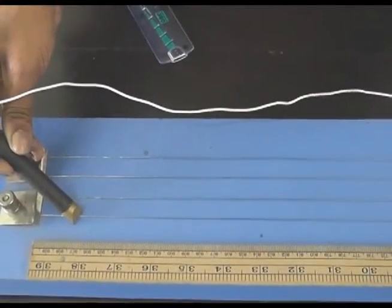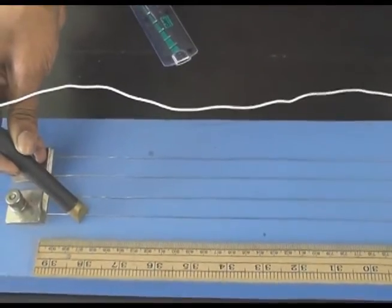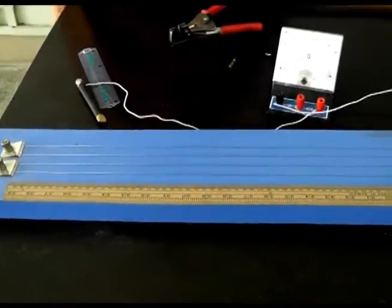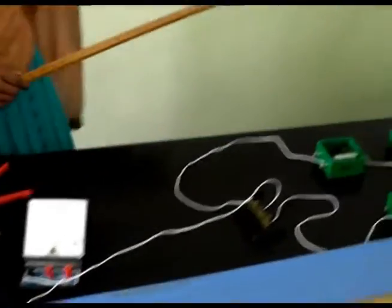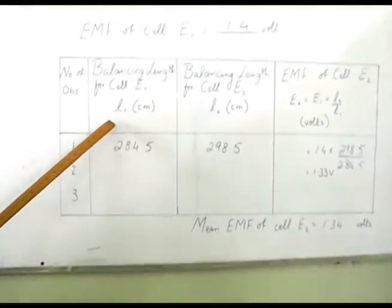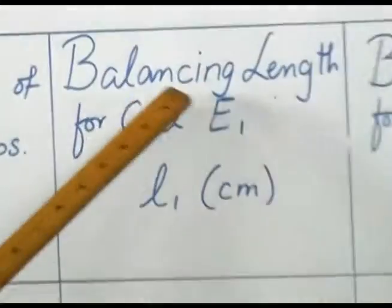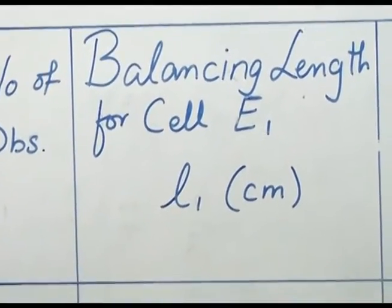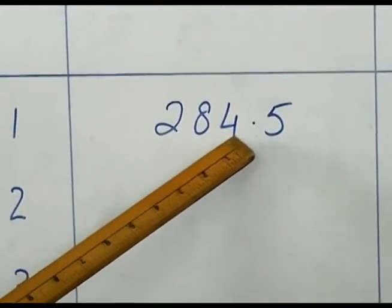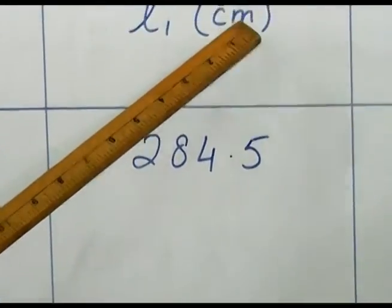Now, the readings which we have observed here, the length of L1 and length of L2, we have written in our table. Now, these are the actual values. You can see here that the balancing length for cell E1, L1, that is 284.5 centimeters.